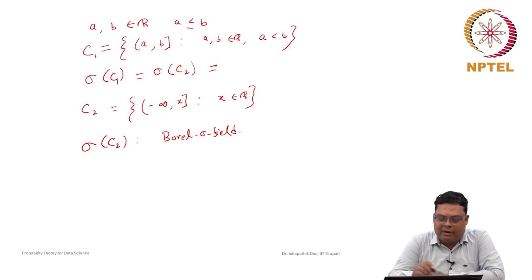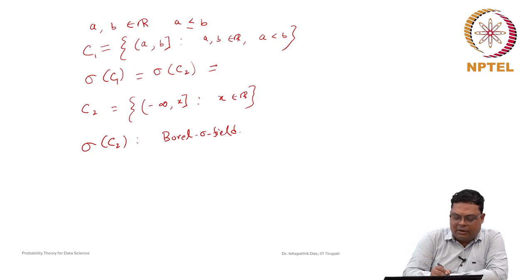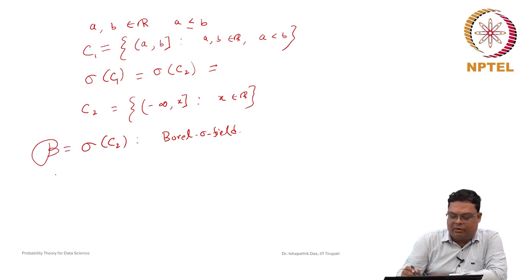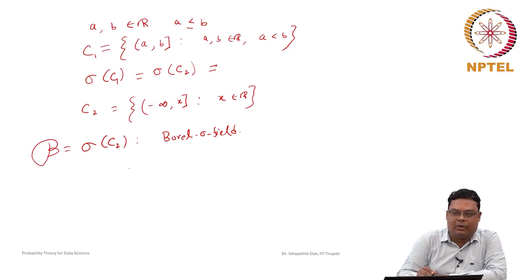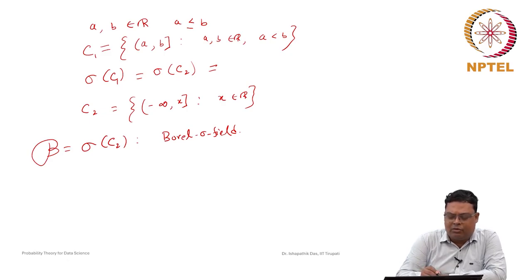Both sigma fields are the same, and this kind of sigma field has a well-known name. The sigma field generated by C2 is known as the Borel sigma field. The Borel sigma field contains all intervals — half-open, half-closed, and intervals of the form (minus infinity, x]. It is denoted by the script B. Most sets you can think of will be inside the Borel sigma field; those that are not are called non-Borel or non-Lebesgue measurable sets.